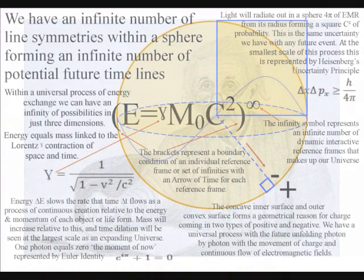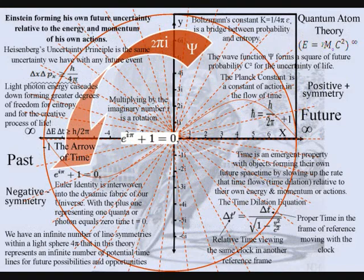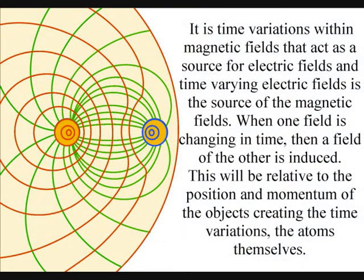This potential is in geometrical form with an infinite number of line symmetries within a sphere that in this theory represents an infinite number of potential timelines, with each one being at right angles to the surface of the sphere, representing electromagnetic fields always being at right angles to each other.